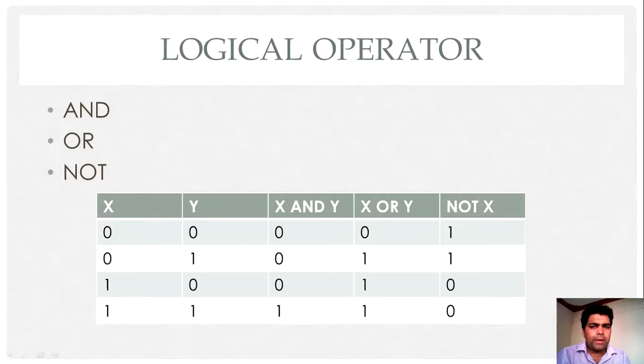Third category of operator in VB.NET is a logical operator. In logical operator, the first operation is an AND operation. Let's explore the AND operation.